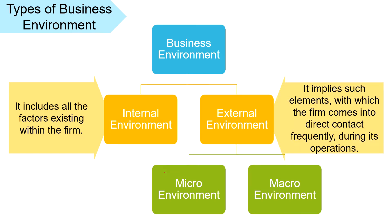Now talking about the external environment — it implies those individuals, groups or institutions with which the firm comes into direct contact on a frequent basis during its operations. Such factors and conditions are outside the control of the organization and affect the business performance. It is divided into two categories: micro environment and macro environment.